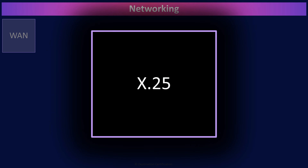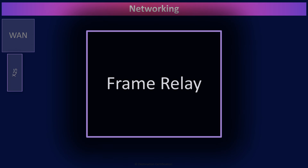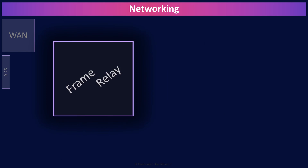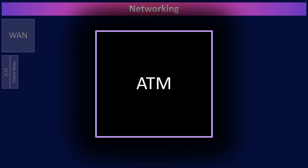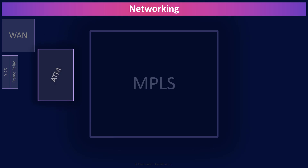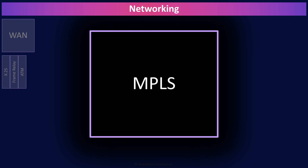X.25 was one of the first protocol suites for packet-switched networks across a WAN, a wide area network. X.25 was first published back in 1976, meaning it came out even before IP version 4 and the OSI model. Frame relay mostly replaced X.25. ATM, asynchronous transfer mode, then mostly replaced frame relay. And MPLS, multiprotocol label switching, which can encapsulate various protocols including frame relay and ATM, has become the dominant wide area network protocol today.